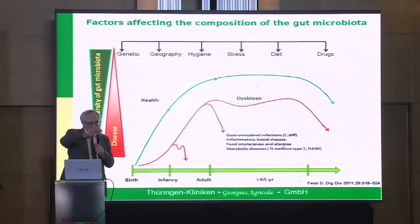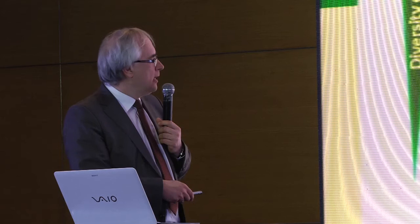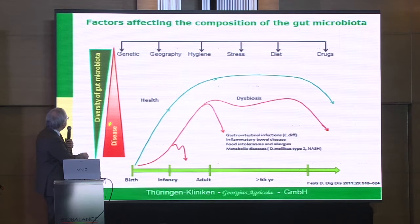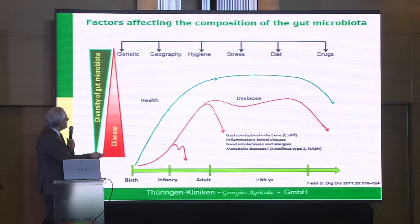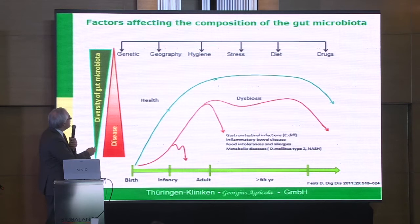If we look at the development of our gut microbiota, it's a process that begins actually at the end of pregnancy, or just during delivery of the child. The first months of our life are the most important. Then in infancy we have an increasing diversity of gut microbiota — this is the green line. This eubiosis is influenced by a number of factors: genetic, geography, hygiene, stress, diet, and of course drugs.